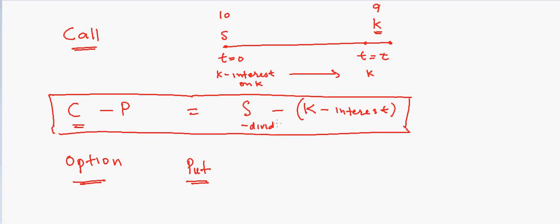Right, so that's how the call-put parity looks like. So now this call-put parity is one of the very important equations because we can rearrange these numbers to either buy a synthetic call or buy a synthetic put. So suppose if you want to buy a synthetic call, all we need to do is buy the stock, buy the put, and then put some money or get some money on interest.